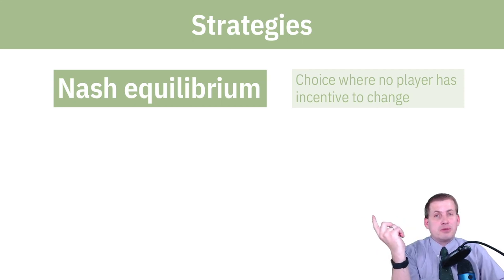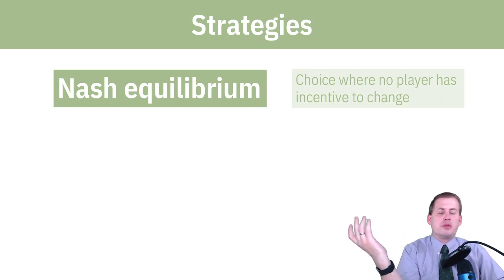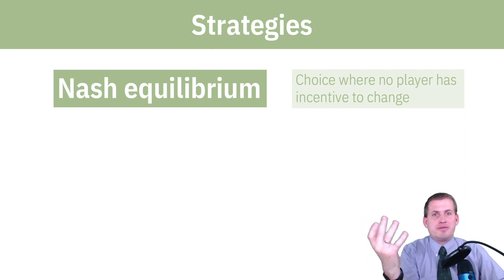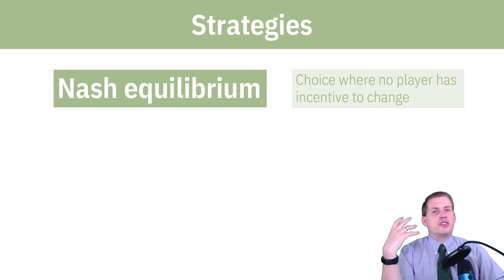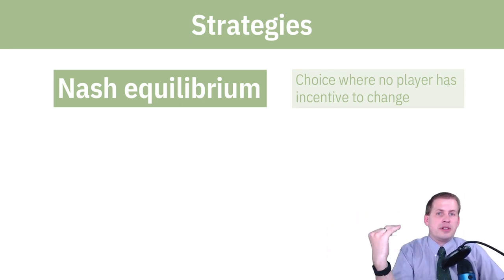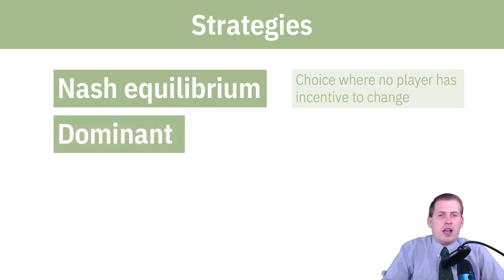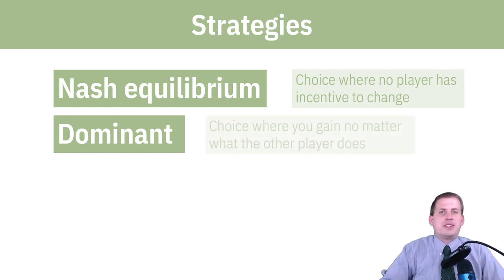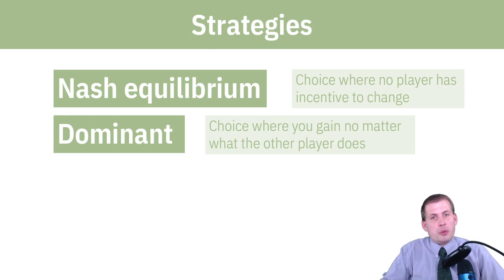Nash equilibrium is named after a guy named John Nash, who was a mathematician. There's a famous Oscar-winning movie about him called A Beautiful Mind — you may have seen memes of him drawing on windows with whiteboard markers. He's the guy who helped invent this whole field of game theory. A dominant strategy is a choice where you win, or get positive benefit, no matter what the other person does.